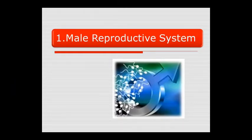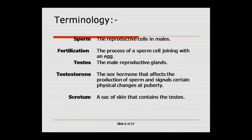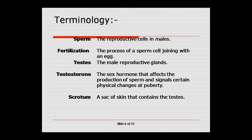Today we start the male reproductive system. Key terms include: sperm, fertilization, testes, testosterone, and scrotum. Sperm are male reproductive cells. Fertilization — जब sperm cell, egg cell के साथ join होती है, fuse होती है, तो उसको fertilization कहते हैं. Sperm male की cell है और egg या ova female की cell है।